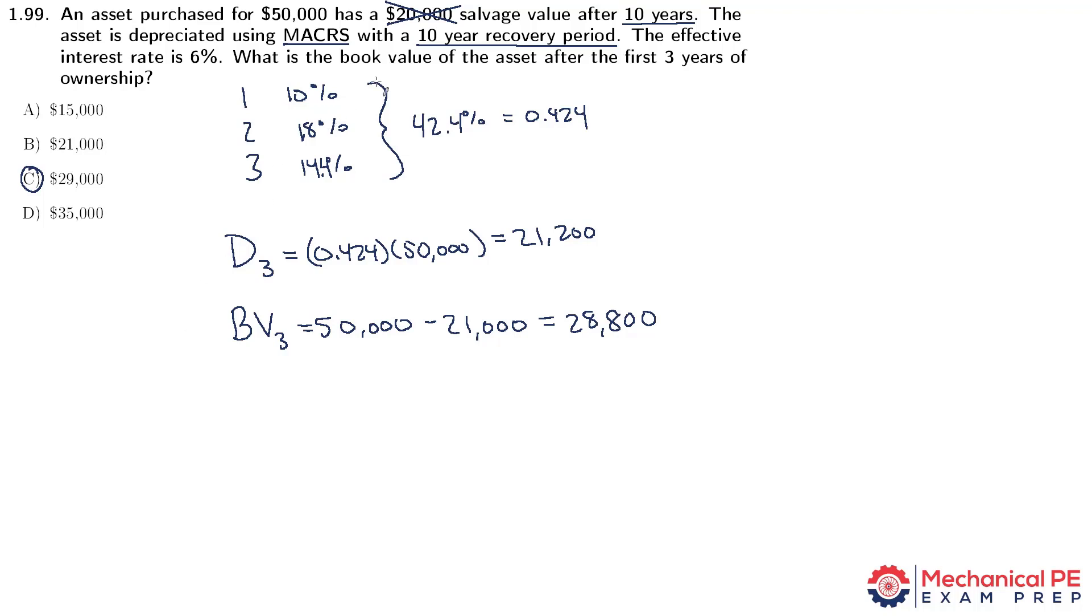The interesting thing about straight line depreciation is sometimes the salvage value is predicted at the beginning. So the end point that we're driving to isn't necessarily zero, it's the salvage value. But that's not the case when we're using MACRS. We do depreciate all the way to zero, and we do it with predefined percentages, which are a function of the recovery period. That's why this solution path is the way it is.